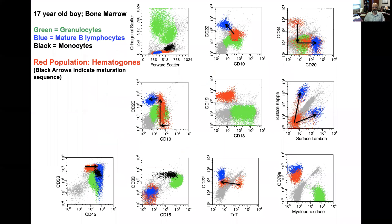Hematogones have a particular pattern, and all cases of B lymphoblastic leukemia will divert from that pattern — that's the principle. I will leave you with this image of these beautiful little B cells going to B cell school.